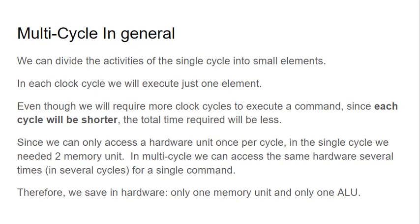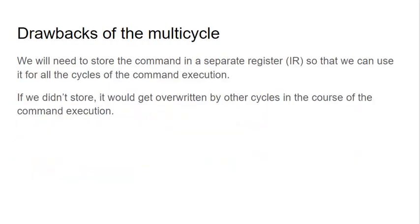Before we had to use an adder and an ALU; now we're going to have just one ALU and one memory access operation. The drawback of multi-cycle is that we need to save certain pieces of information in registers so they can exist between cycles. Since we're going to have several cycles to do one instruction, we need to save data from previous cycles for following cycles. Therefore, we need to add registers — so we remove some hardware like the adder, but we add registers.